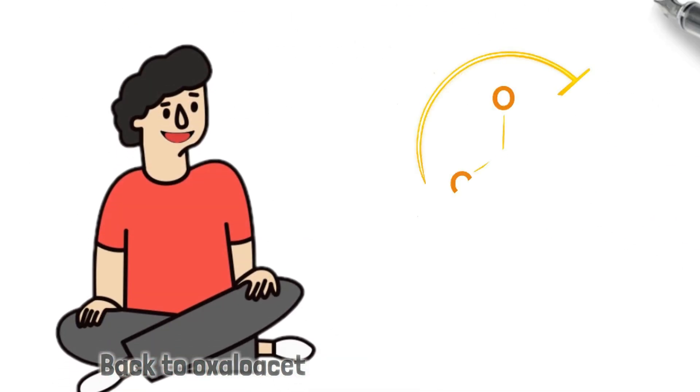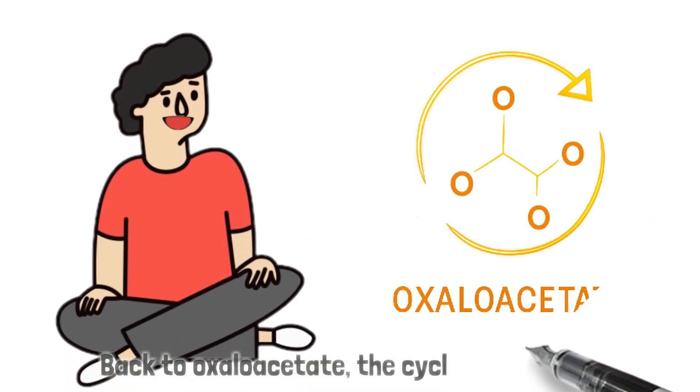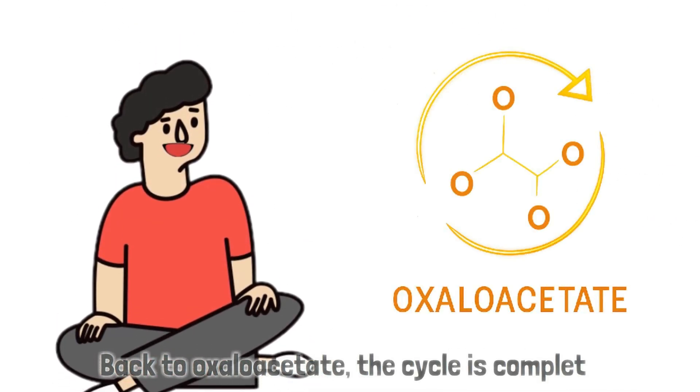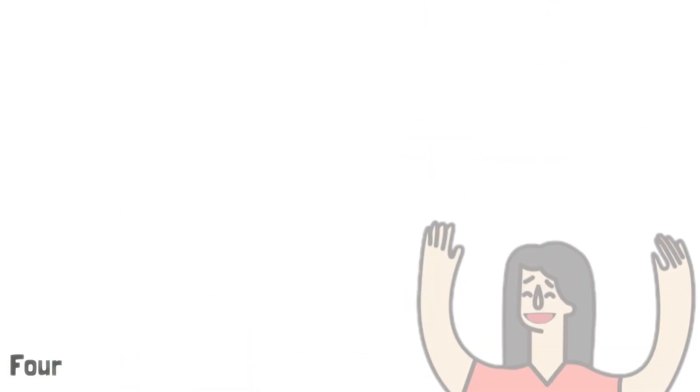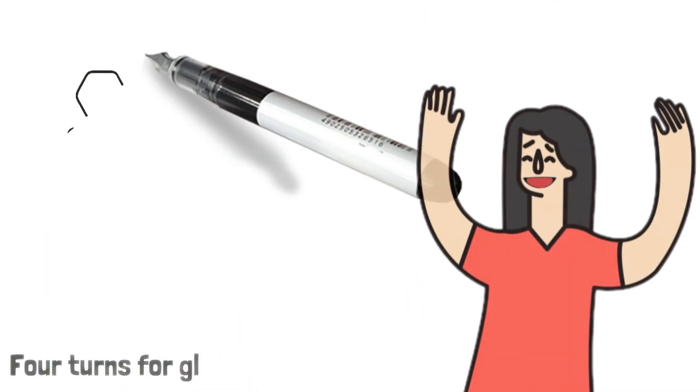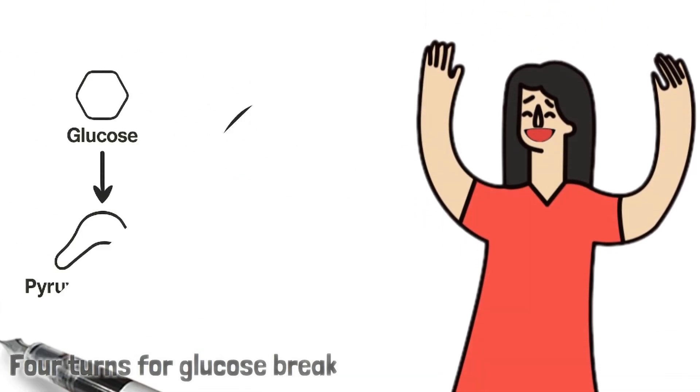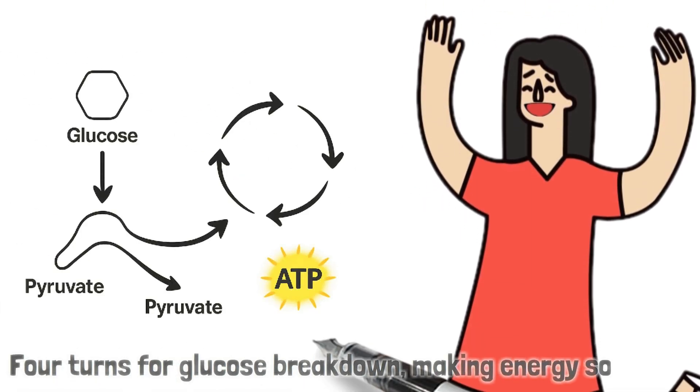Back to oxaloacetate, the cycle is complete. Four turns for each glucose breakdown, making energy so sweet.